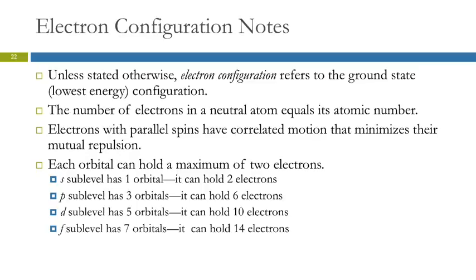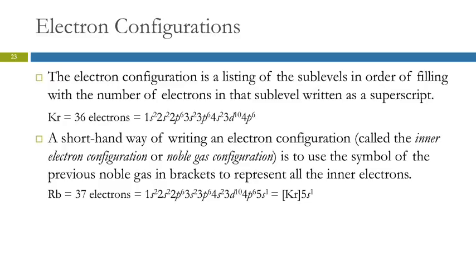It can be hard to understand how two negative electrons can be in the same orbital. We have to acknowledge that electrons aren't just particles — they are also waves. With opposite spins, it's more like being in or out of phase, and parallel spins have a correlated motion that minimizes repulsion. We list sublevels in the order of filling when writing an electron configuration.